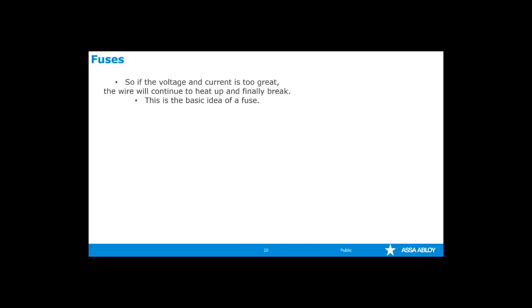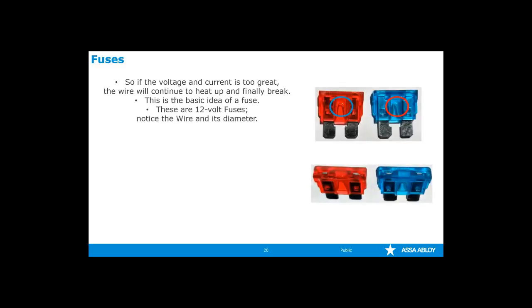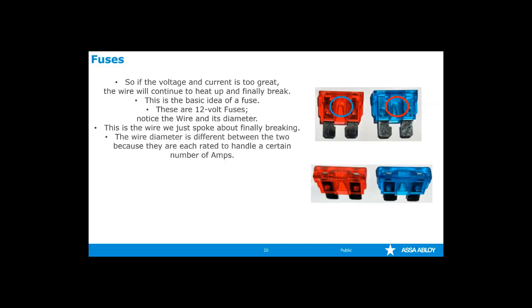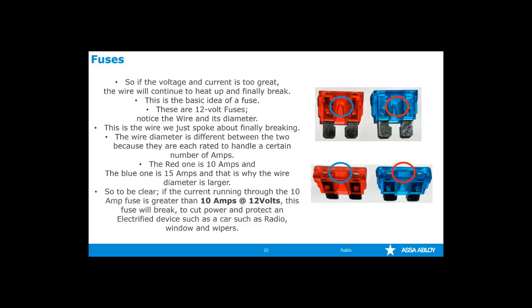This is the basic concept of a fuse. These are 12-volt fuses used in cars. Notice the wire and its diameter. The wire diameter is different between the two because they are each rated to handle a different number of amps at 12 volts. The red one can handle 10 amps while the blue one can handle 15 amps, and that's why the wire diameter is larger in the 15-amp than in the 10-amp fuse. To be clear, if the current running through the 10-amp fuse is greater than 10 amps at 12 volts, the fuse will break, cutting the power to protect the electronic device it's designed to power, such as the car radio, windshield wipers, and so forth.